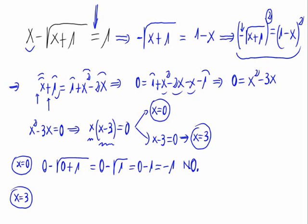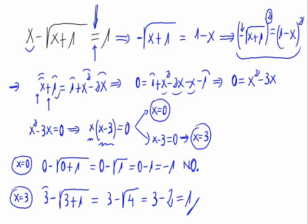So X equals 0 is not a solution for the given equation. Let's try with X equals 3. That's 3 minus the square root of 3 plus 1, 3 minus the square root of 4, that is 3 minus 2 equals 1. As it equals 1, X equals 3 is the only solution for the given equation.